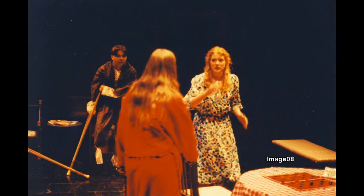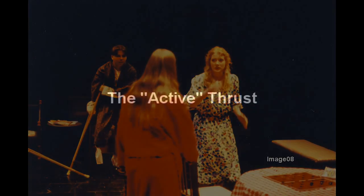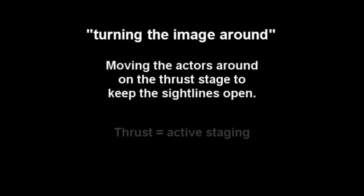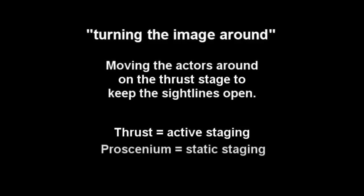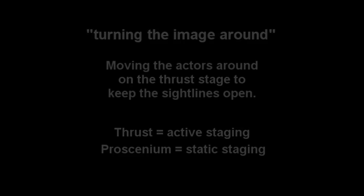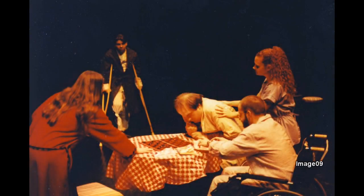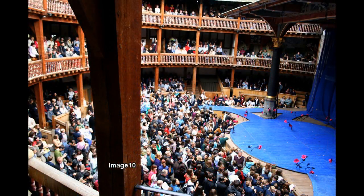The thrust space requires much more movement than the proscenium arch space. In order to allow the best sight line for the audience in all three sections of the house to view the actors equally, the director must move them using a technique referred to as turning the image around. Because of this, we say that the staging in a thrust space is more active, where the staging on a proscenium arch is more static. This poses a challenge but also presents an opportunity for creativity. It's no wonder that sword fights, battle scenes, and dances were popular on the Shakespearean stage, as these active scenarios work well on the thrust space.